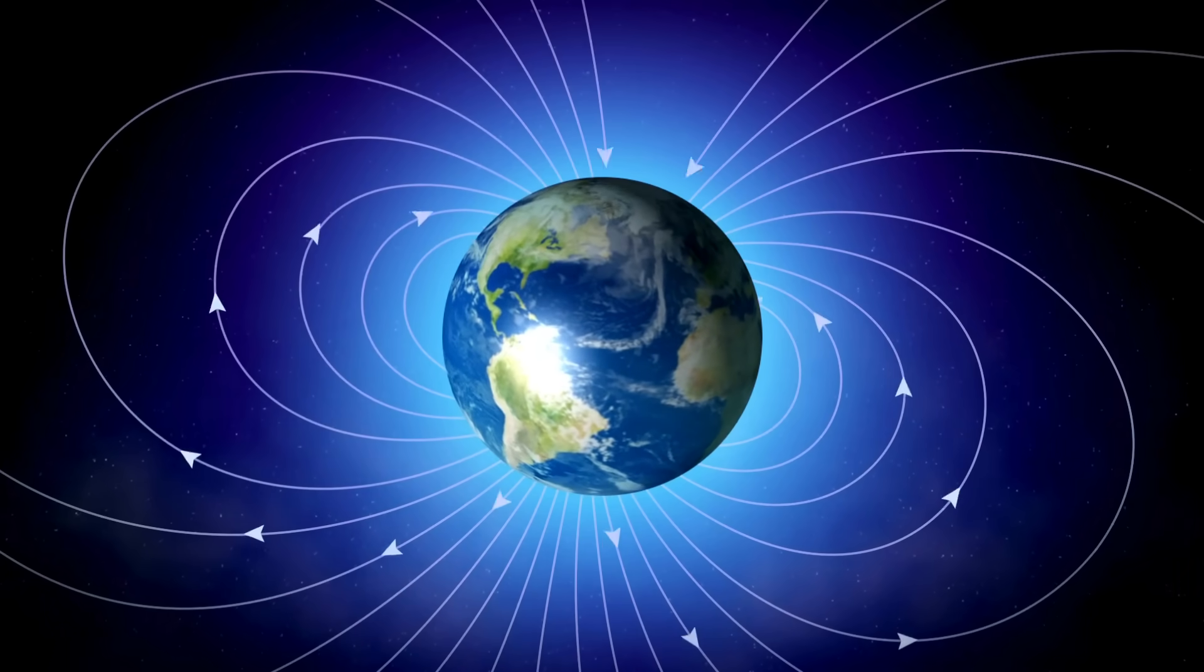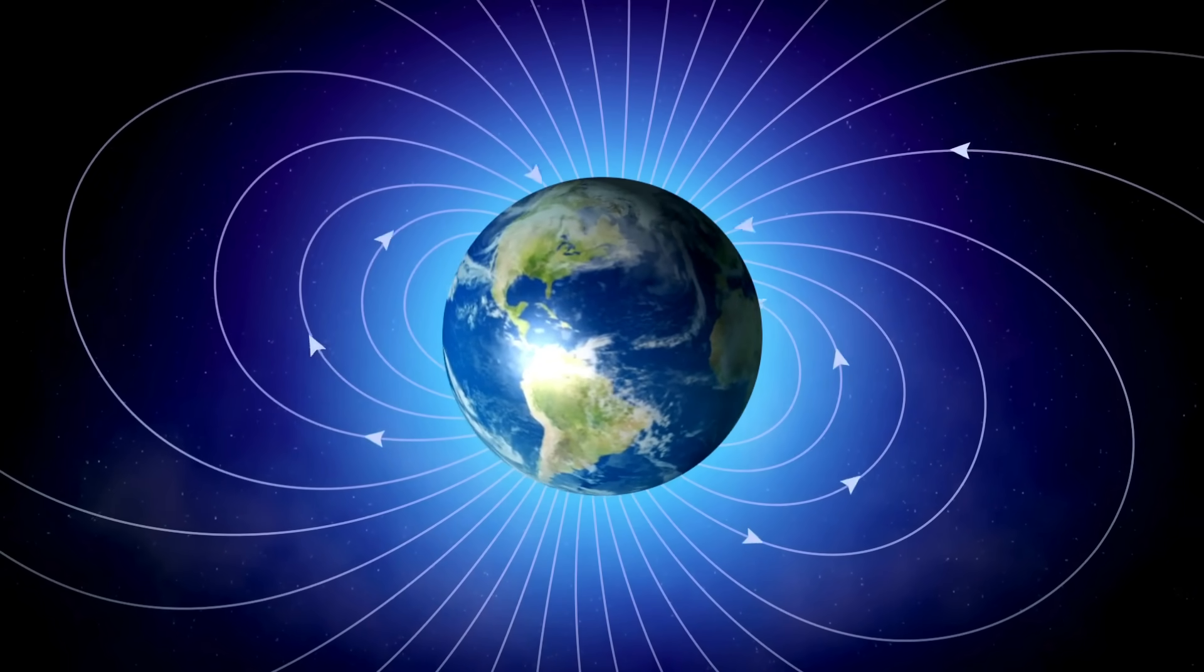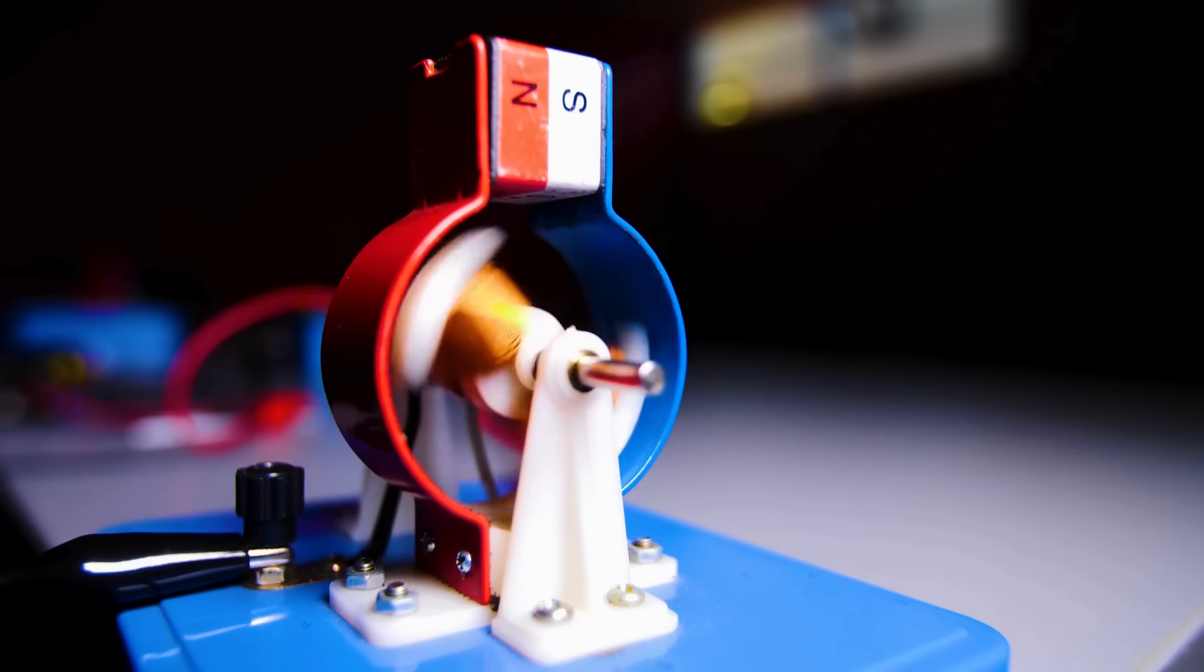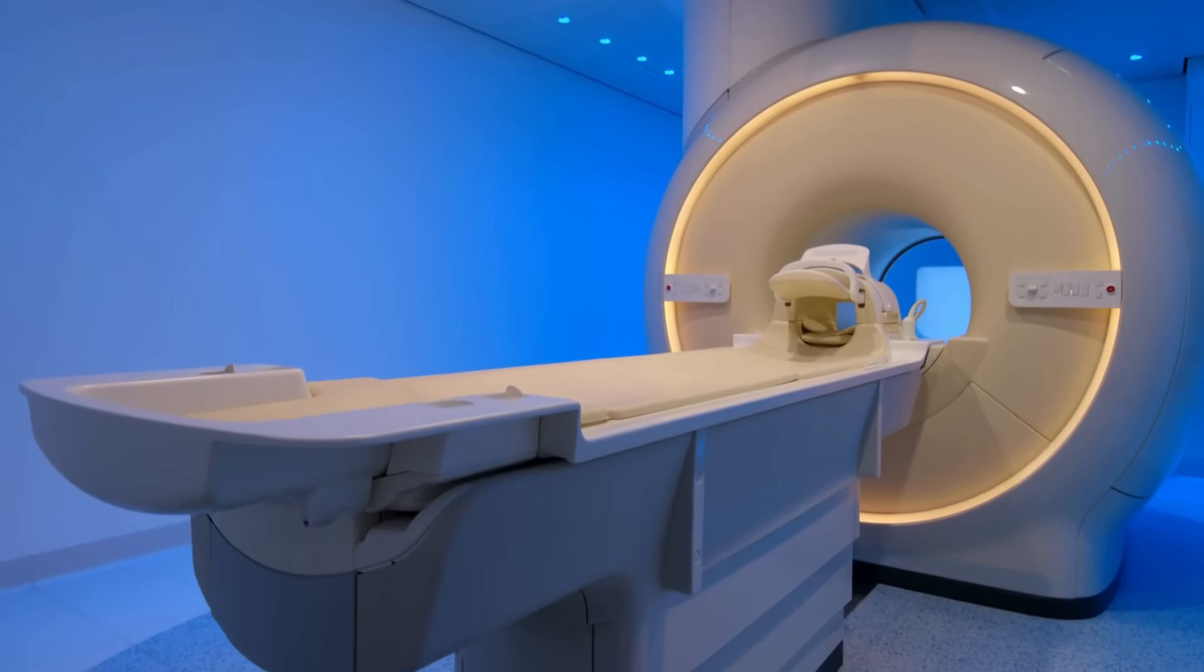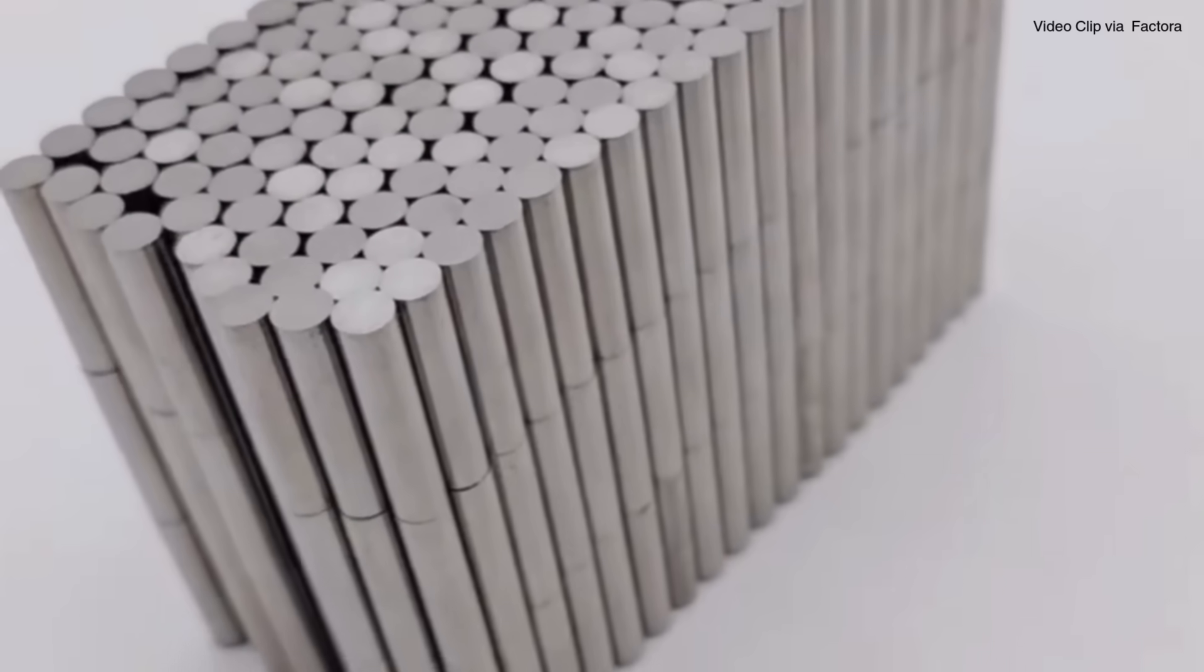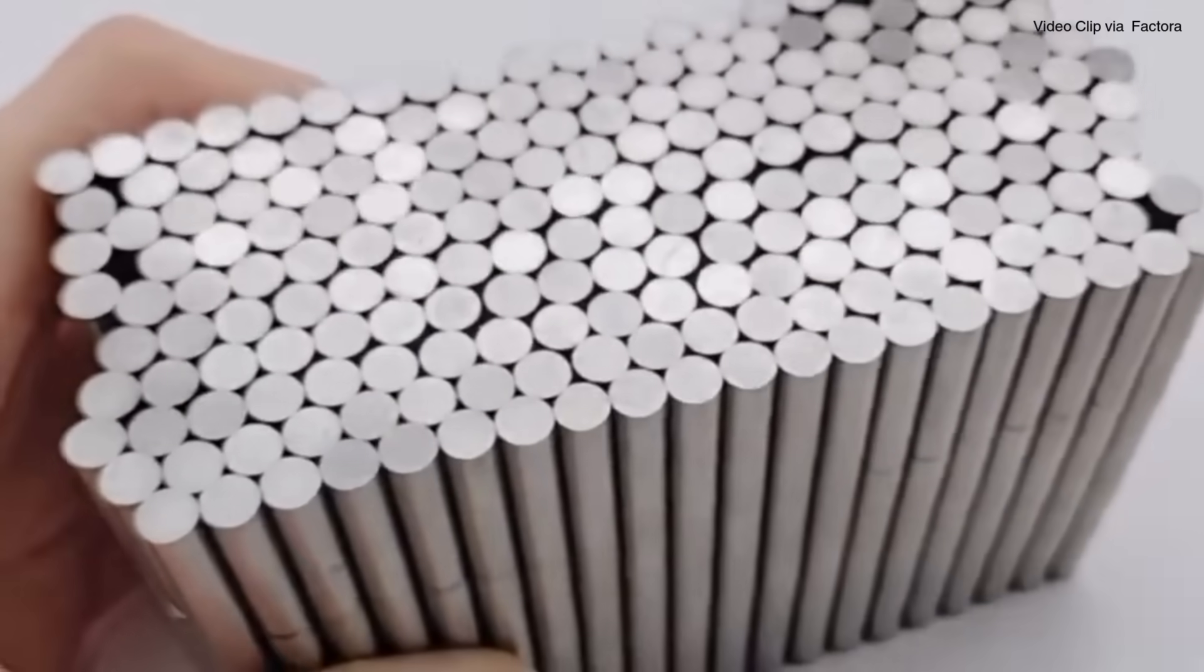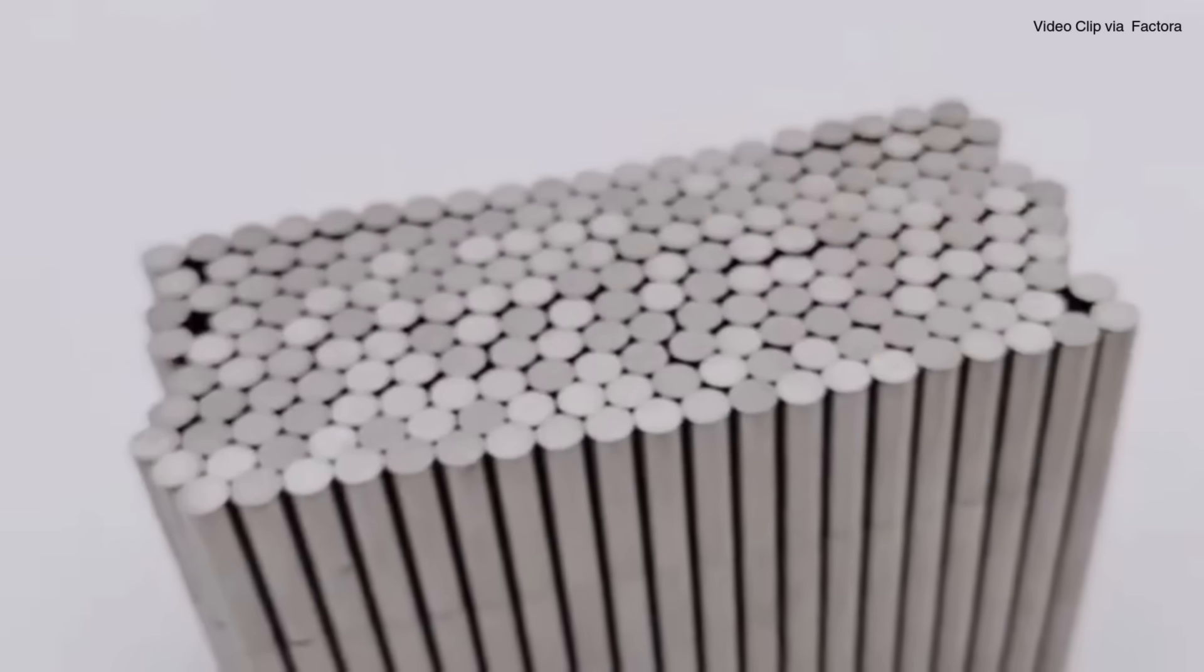When you think about the Earth's magnetic field, it's easy to forget just how much power it has. Similarly, Alnico magnets hold the key to countless technologies. They help keep motors running smoothly, amplify sound in speakers, and even assist in medical imaging through MRI machines. Their ability to maintain strength even in extreme conditions makes them indispensable in industries that rely on stability, much like how the Earth's magnetic field guides us.